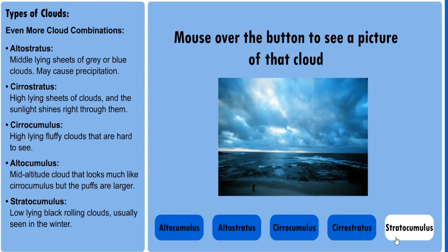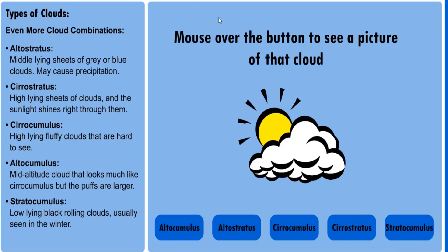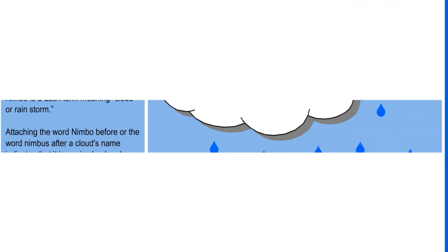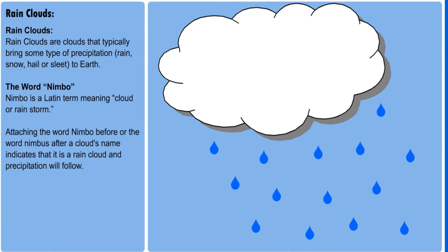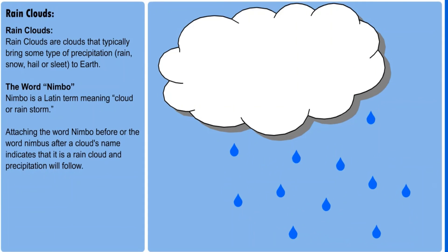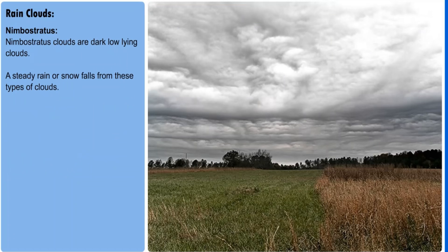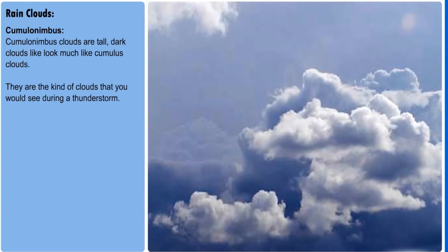As we have discussed before, the most typical combination of cloud name would include the word nimbus or nimbo. Any cloud with the word nimbo, such as cumulonimbus, would be a rain cloud, and you will get some form of precipitation from it.